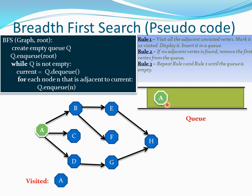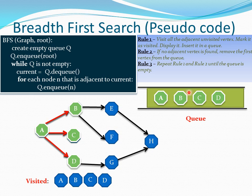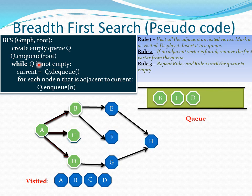Now let us visualize this. We pass root node A. We create an empty queue, then enqueue A. In our while loop, the queue has A in it. Current equals queue.dequeue, so we are taking A as our processing node. For each node N adjacent to current — current is A, adjacent vertices are B, C, D — we iterate one by one and enqueue them into the queue. We enqueue B, then C, then D. When this iteration is over, current A is automatically removed, so rule two is automatically applied. We now have B, C, D in the queue.